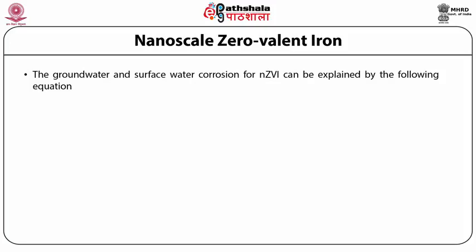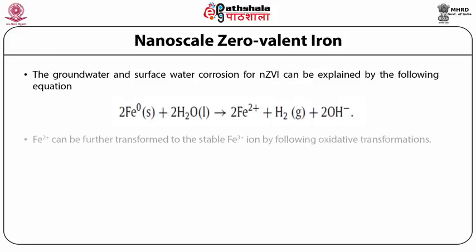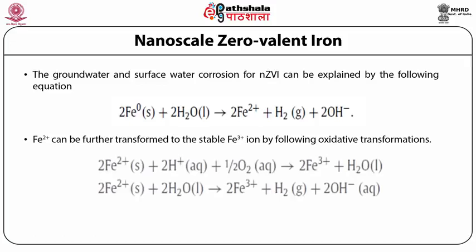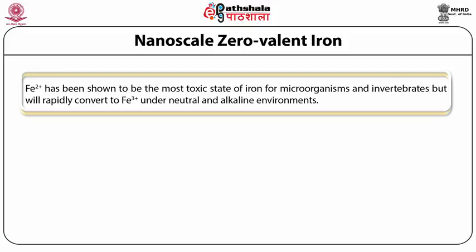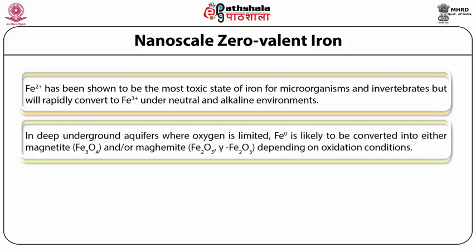The mechanism of bioremediation using nanoscale zero valent iron involves iron reacting with water to form ferrous iron, which is further transformed into ferric iron by oxidative transformations. Ferrous iron is the most toxic state for microorganisms and invertebrates, but it rapidly converts to ferric iron in neutral and alkaline environments. In deep underground aqueous environments where oxygen is limited, elemental iron (Fe⁰) is likely converted into magnetite or maghemite depending on oxidation conditions.